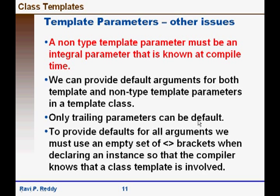And as usual only the trailing parameters, that is the last few of the parameters, can be default. When you want to provide default for all of them, we must use an empty angle brackets to declare an instance so that the compiler knows that the class template is involved.